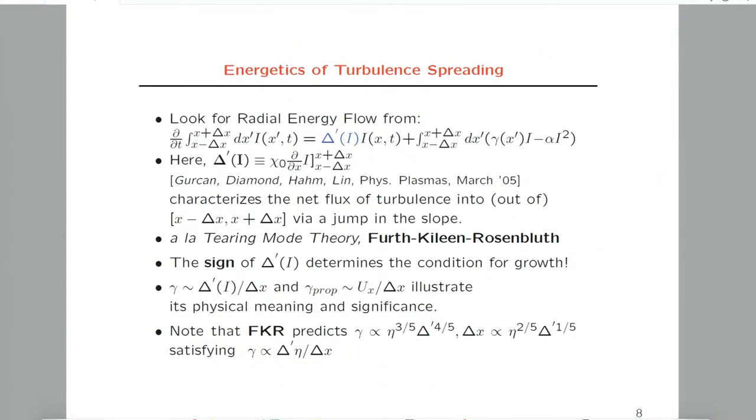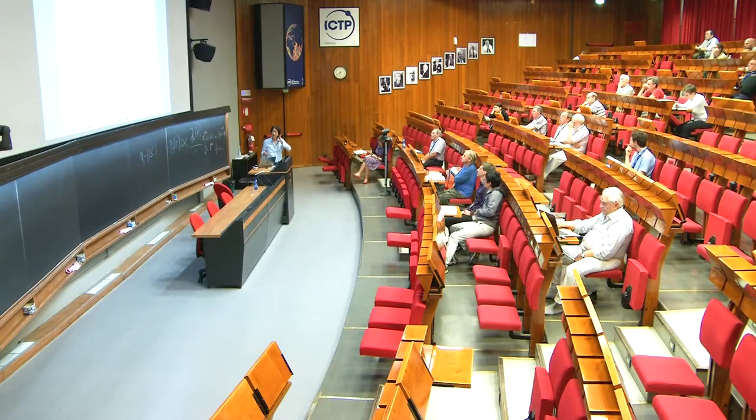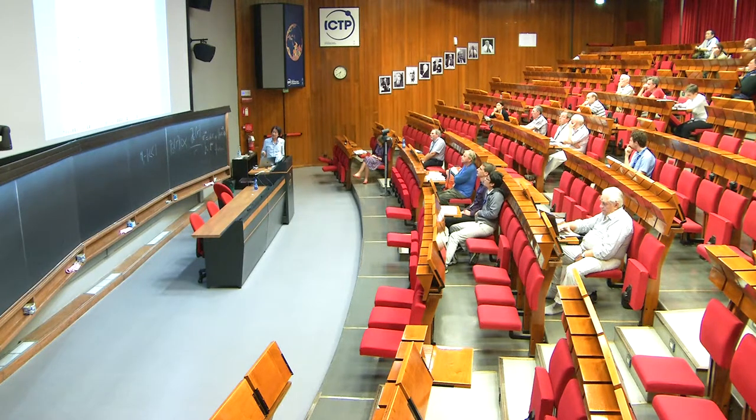If we do the radial integration for some small radial extent, we can rewrite the equation schematically like that. We can define the jump of the gradient of the intensity from the right to the left as delta prime.